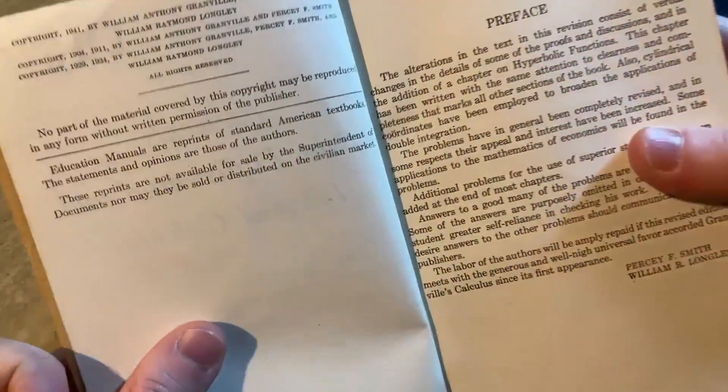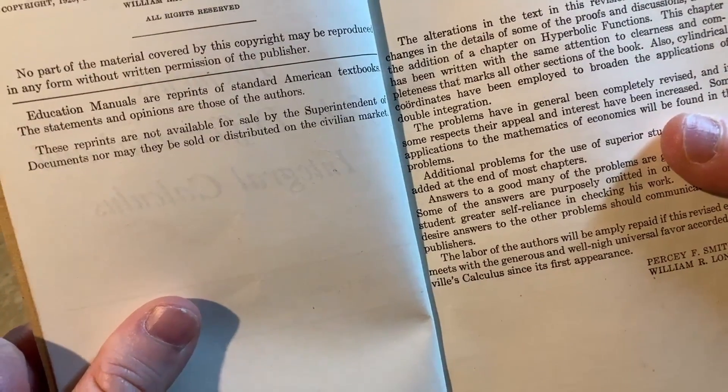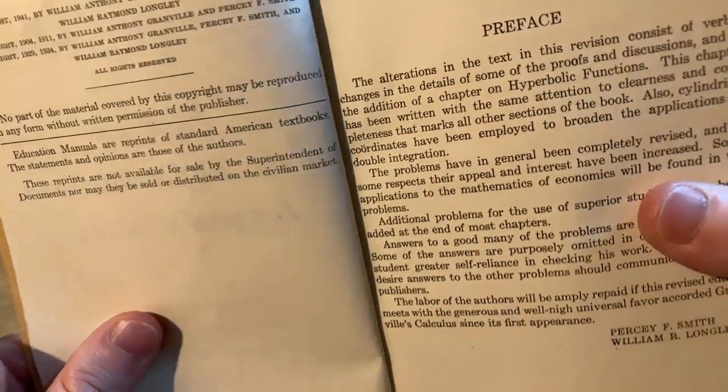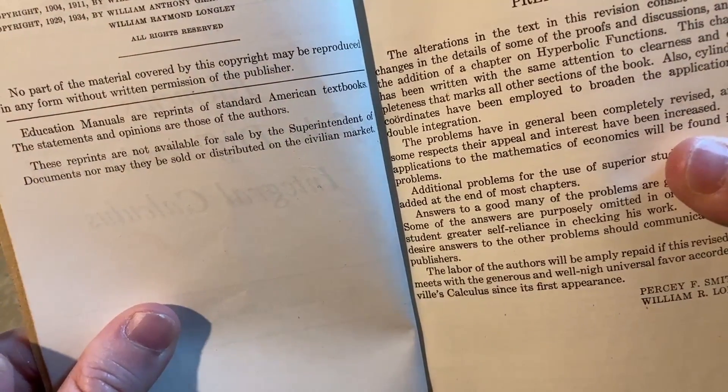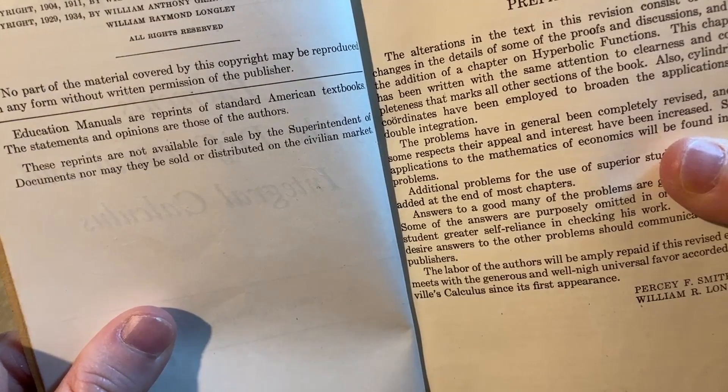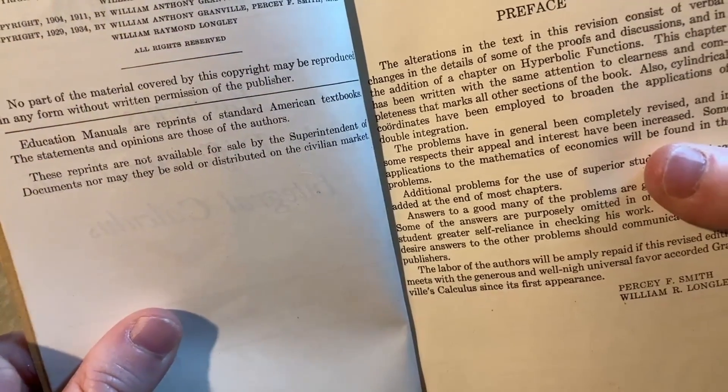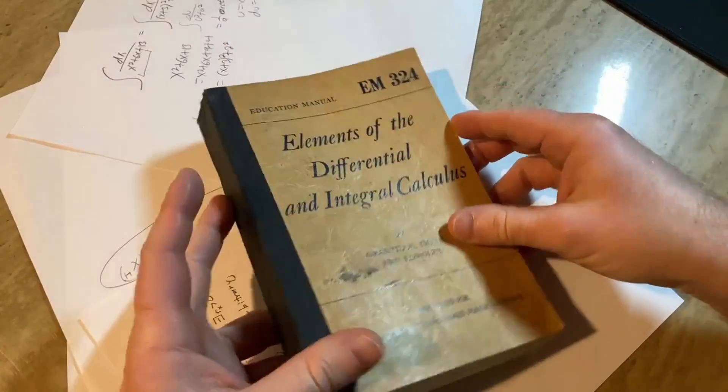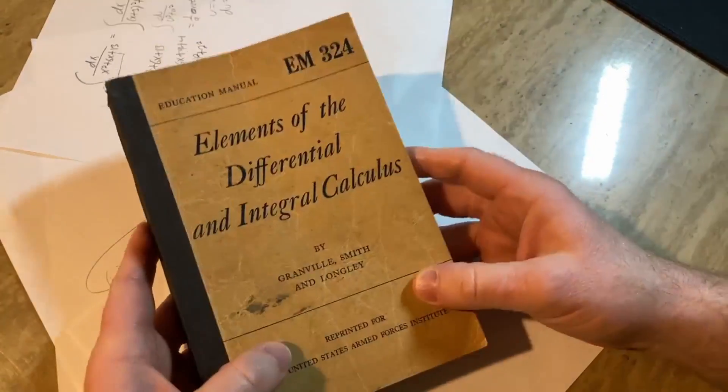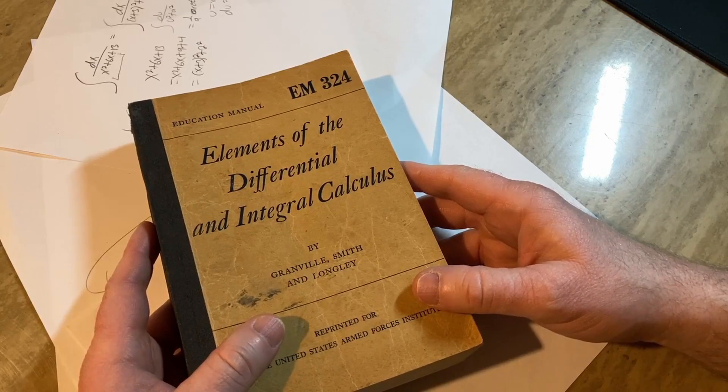It basically says that the book is not for sale. It says these reprints are not available for sale by the superintendent of documents nor may they be sold or distributed on the civilian market.